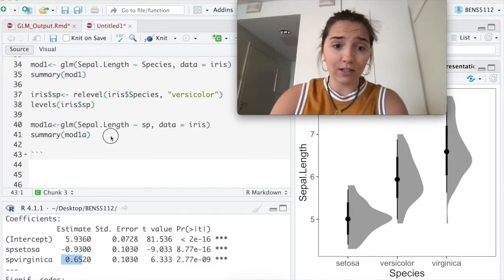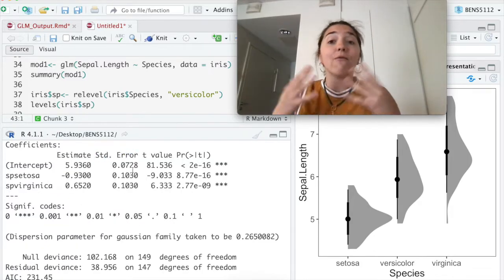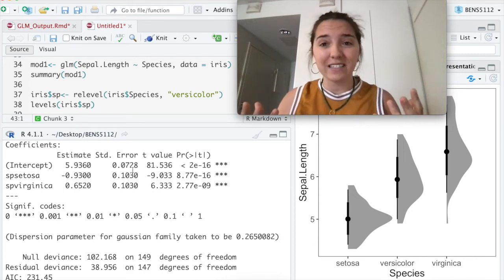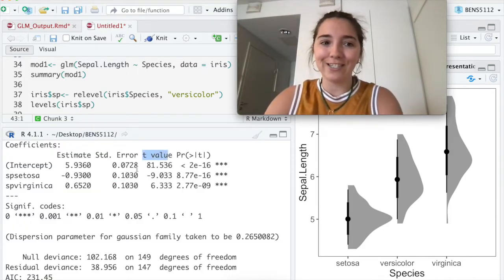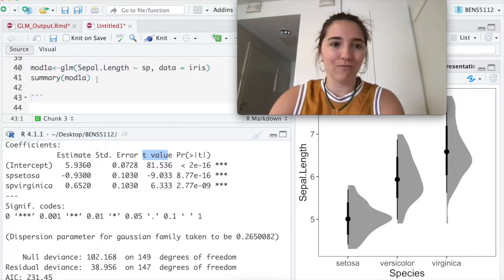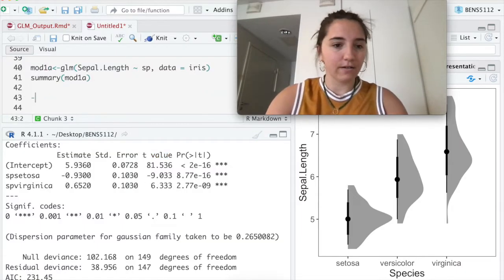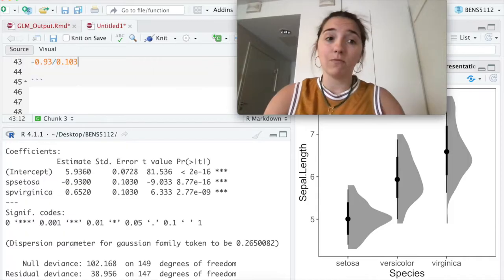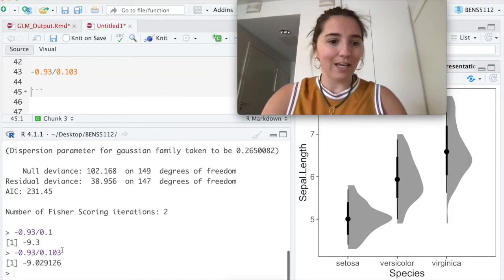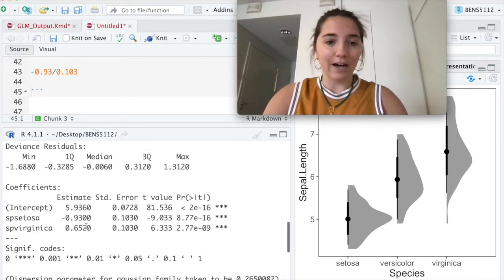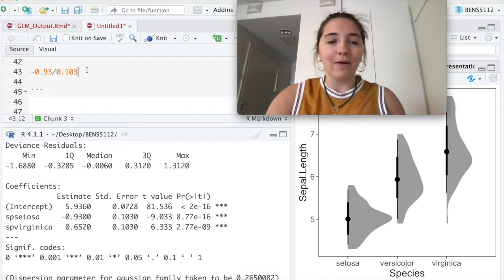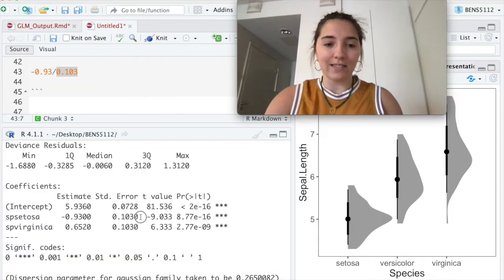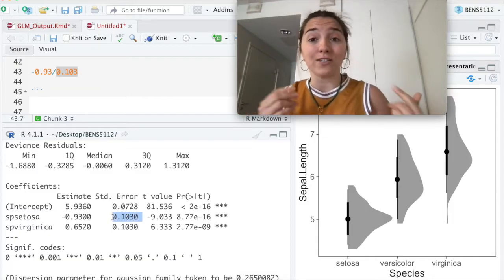While we're here at this middle chunk, we also have our standard error, error around the slope, how much fuzziness is around it. So of course, smaller values are always going to be better. T value is actually just the estimate divided by the standard error. Prove to you that I'm not a liar. So 0.93 divided by 0.103 equals negative 9.209, whatever. And that's this value.